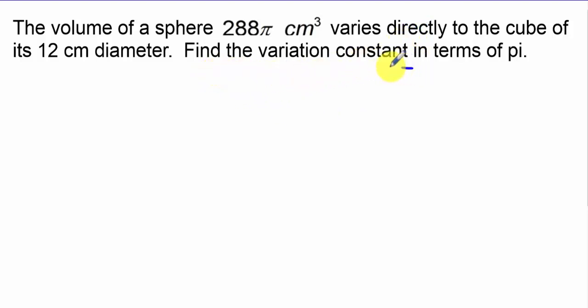This is a singular example problem, or singular situation. I know that the volume varies directly with the cube of the diameter, so I take 288π, set that equal to K times 12 cubed, and simplify. The answer will simply be without units because it's a constant.